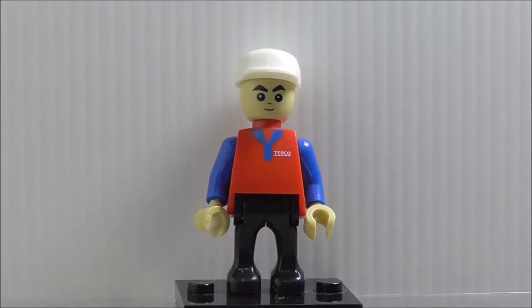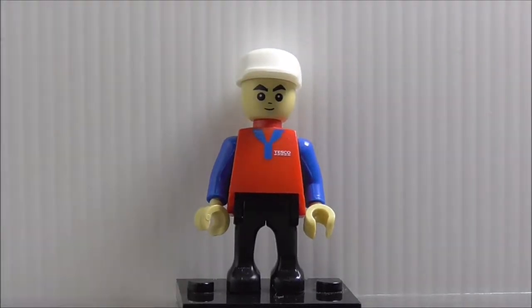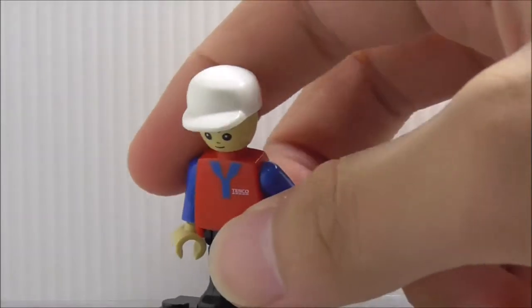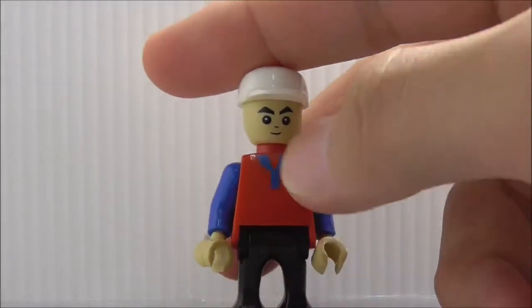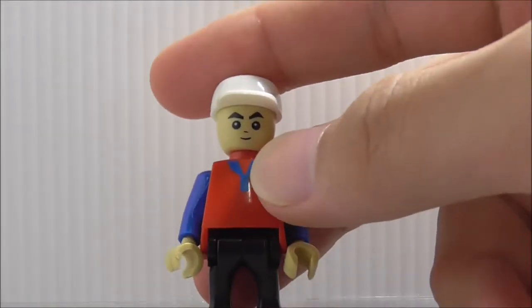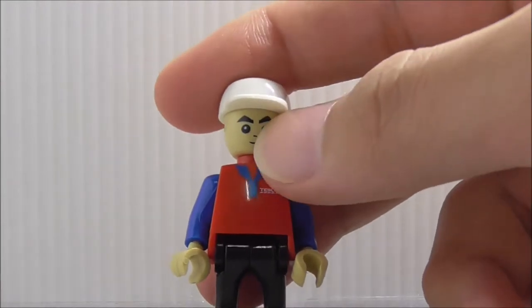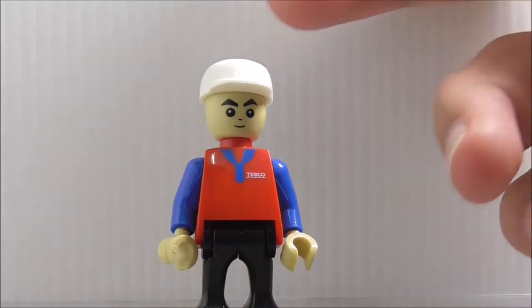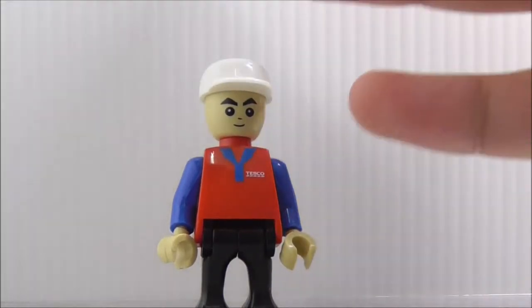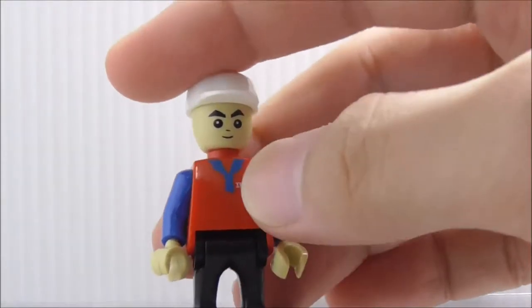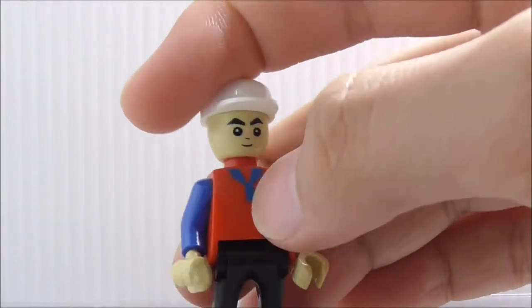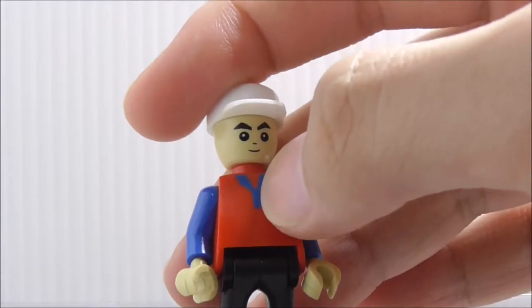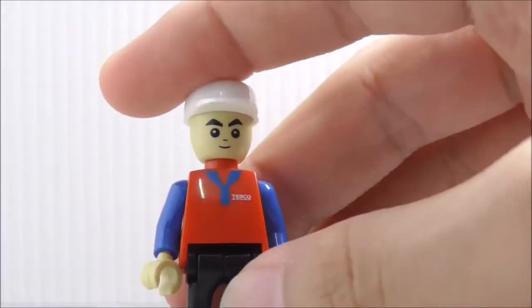So this is the Tesco worker figure included in the set here. You can see he comes with a helmet here and his face looks just normal like all the other figures that you get in a brick brand set. The torso, you got the Tesco and also you got the collar and also the button part.